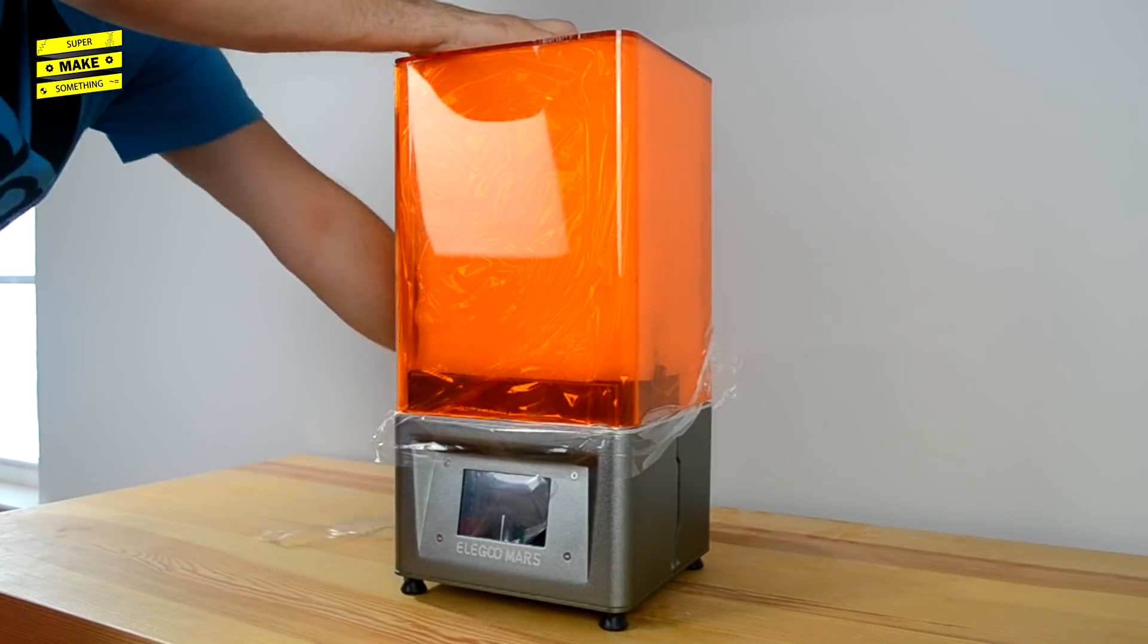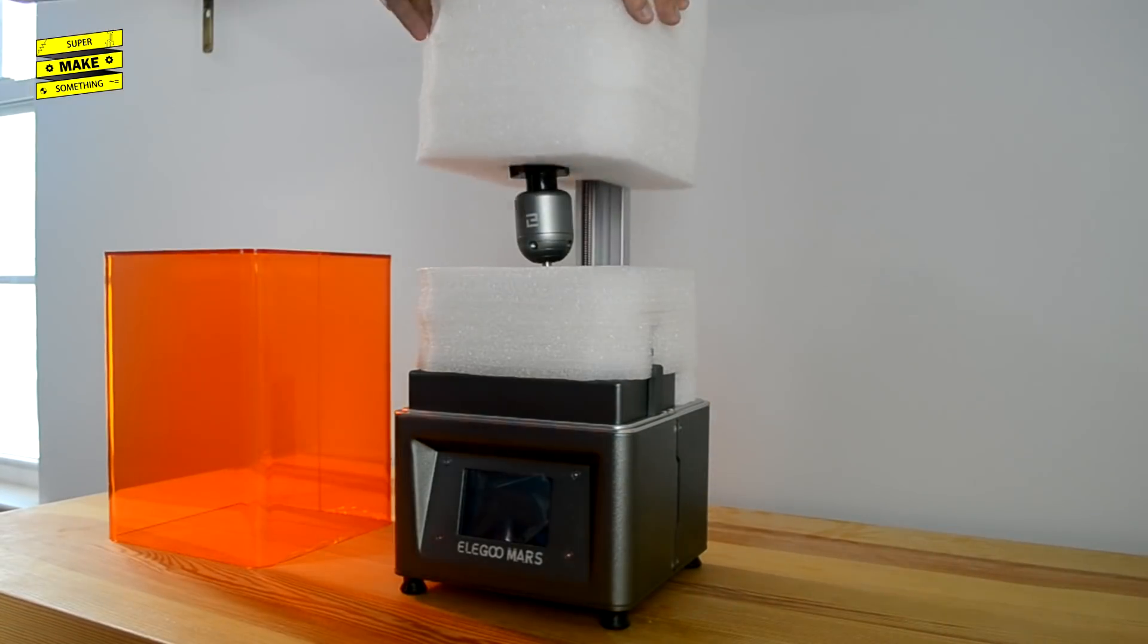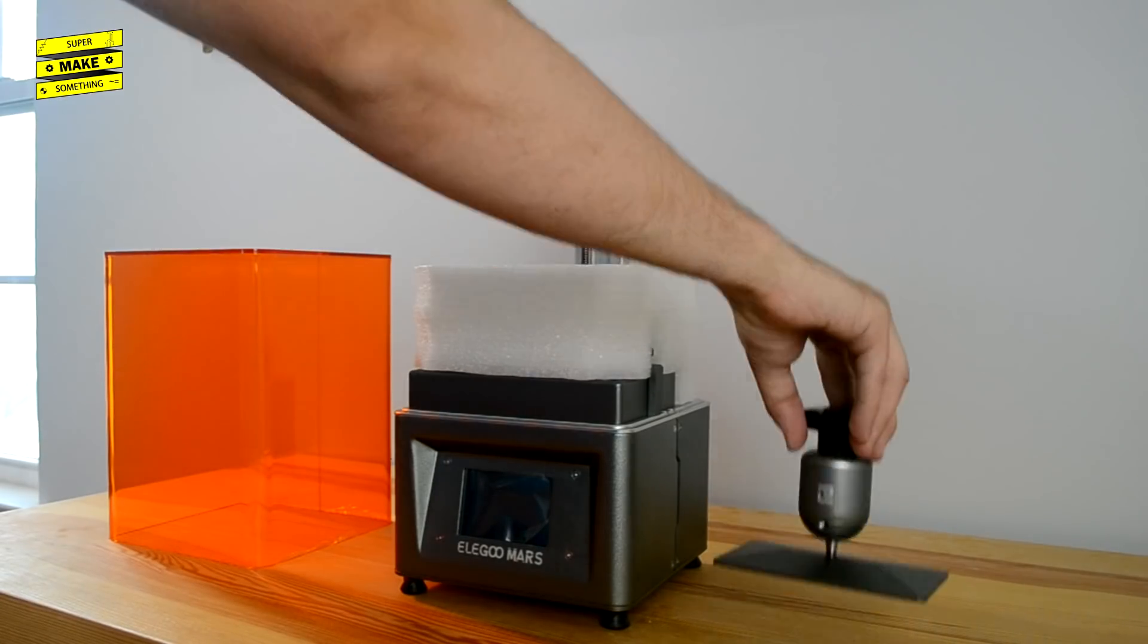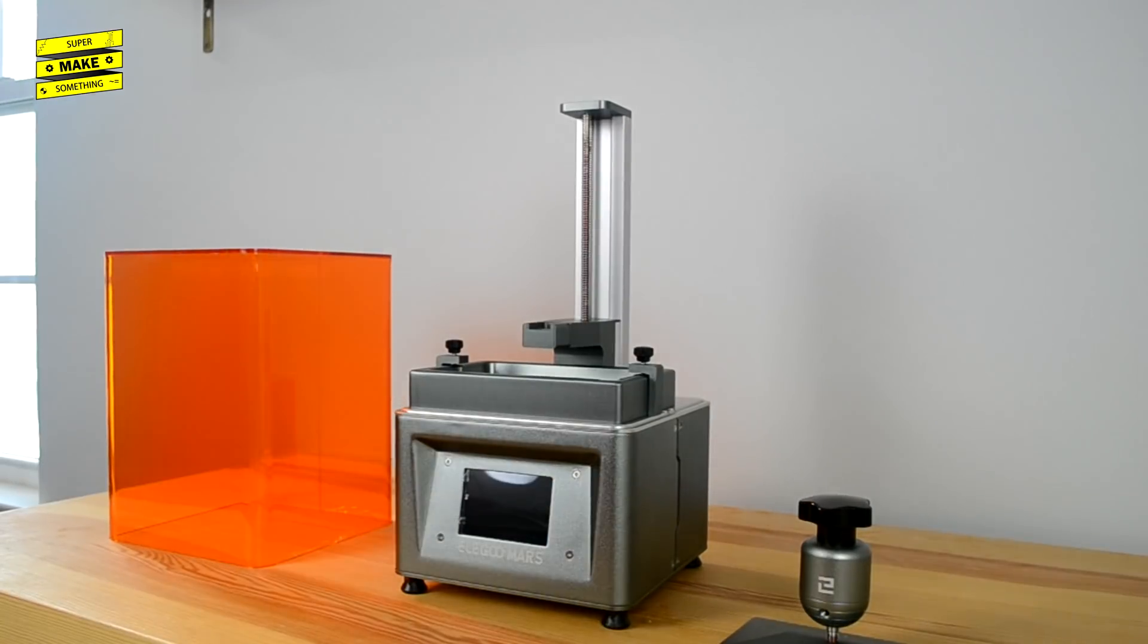Overall, I found the build quality of the unit to be very impressive and think that the unit is well-designed, with the majority of the printer's body and other components made out of a brushed aluminum and the cover made out of a translucent orange polycarbonate.